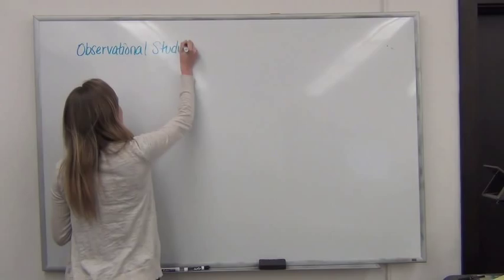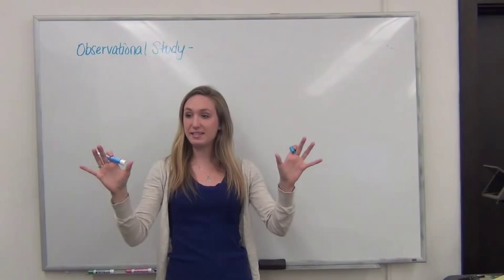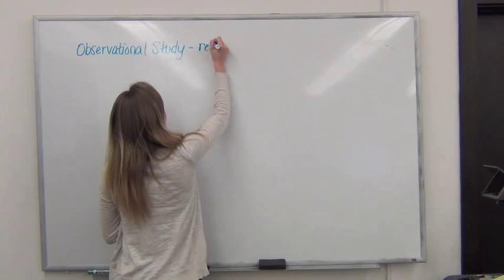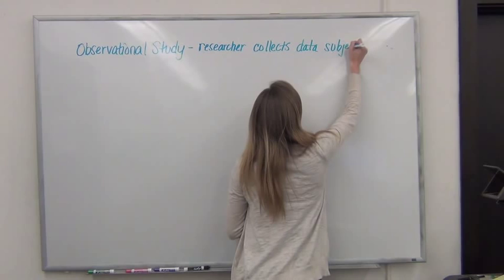And in the observational study, the researcher basically just sits back and collects data on subjects who are already divided into groups. So the researcher collects data on the subjects of the test who are already divided into groups.